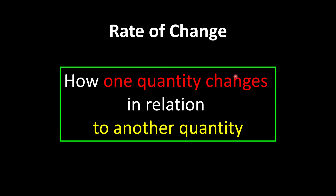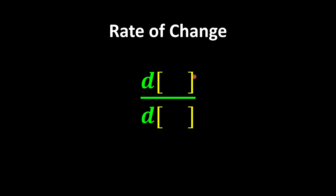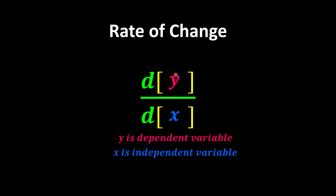Just like how you affect your friends or how your friend affects you. We usually use the symbol dy over dx to represent this kind of rate of change, where y is the dependent variable and x is the independent variable. Dependent means that y depends on x — whenever x changes, y will change following it.